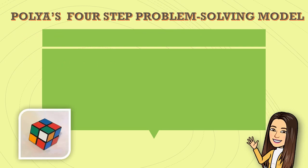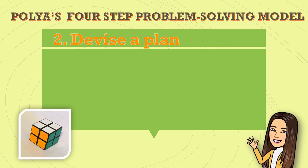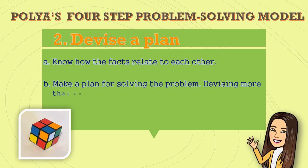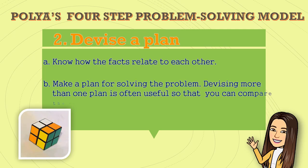Step 2: Devise a plan. A plan or strategy is a way of solving the problem. First, know how the facts relate to each other. Next, make a plan for solving the problem. Devising more than one plan is often useful so that you can compare the effectiveness of each one.